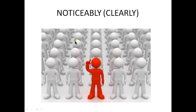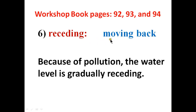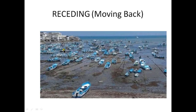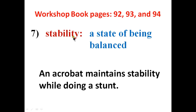Number six word is 'receding.' Receding means moving back — something that is going back. Here is the sentence: because of pollution, the water level is gradually receding. In the picture, you can see there are a lot of riverbanks but no prominent water — the water is going back because of pollution or an environmental hazard, so you can say the water level is receding.